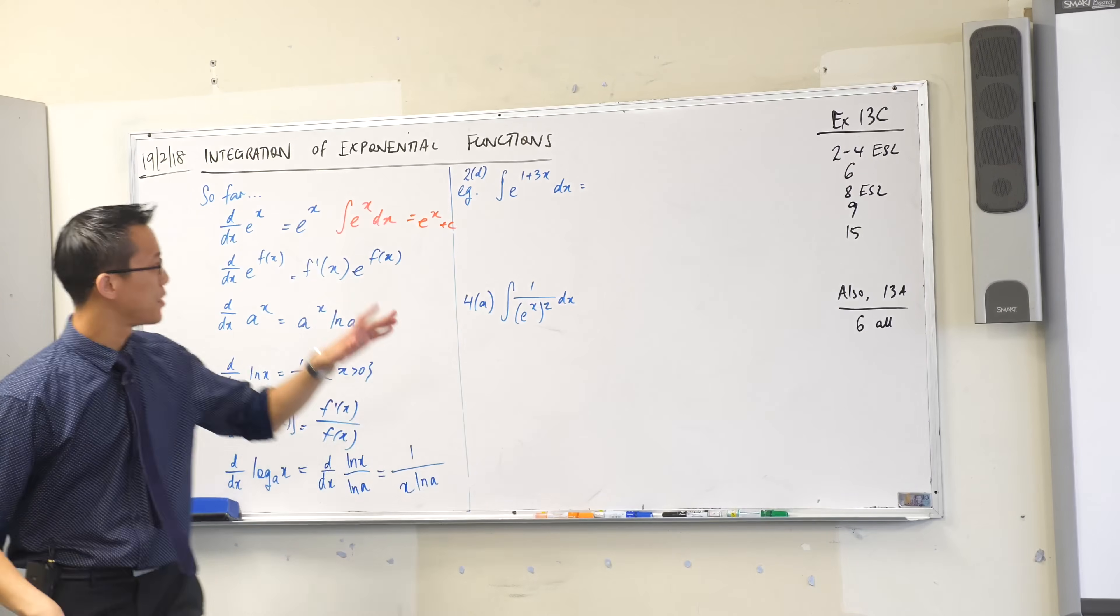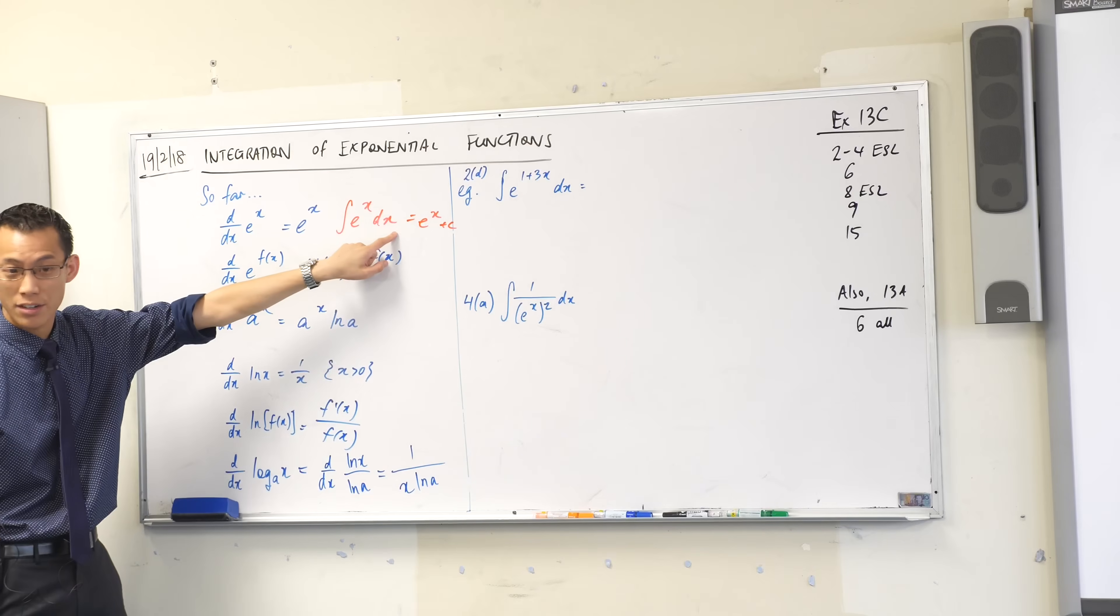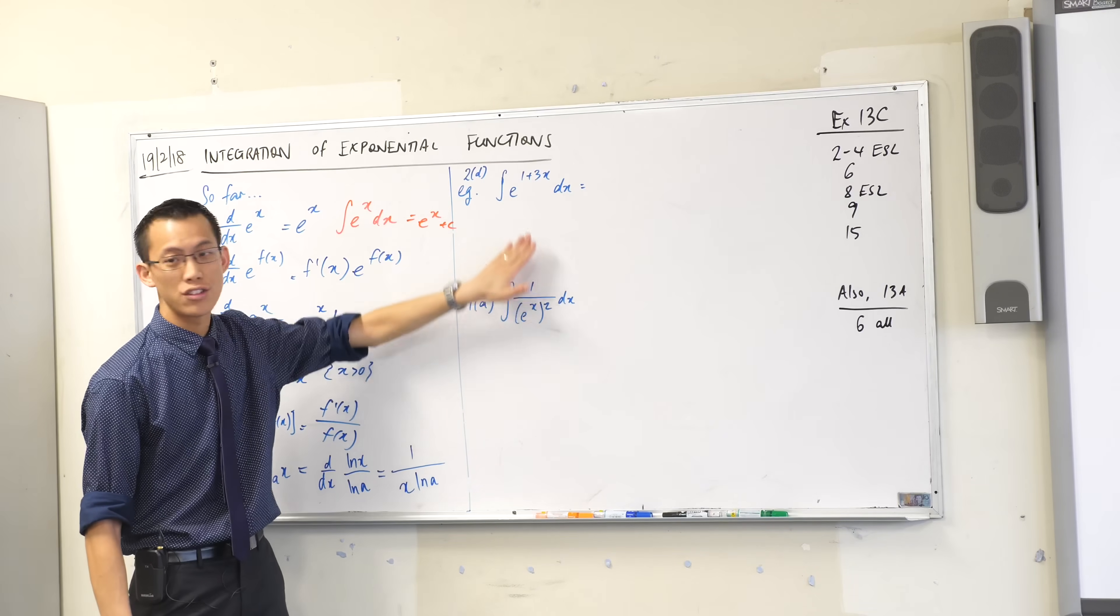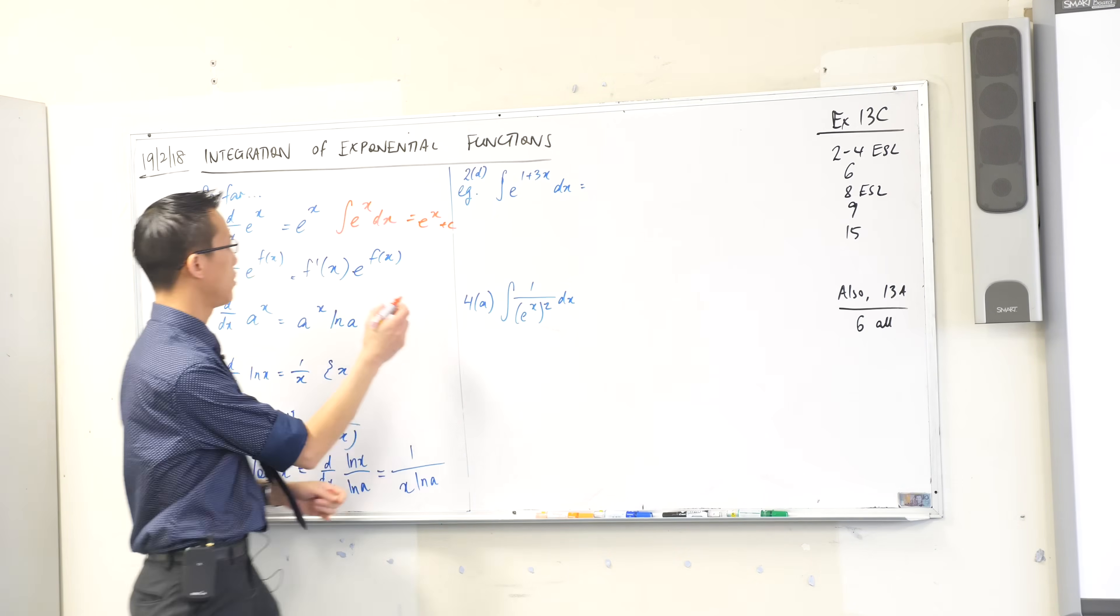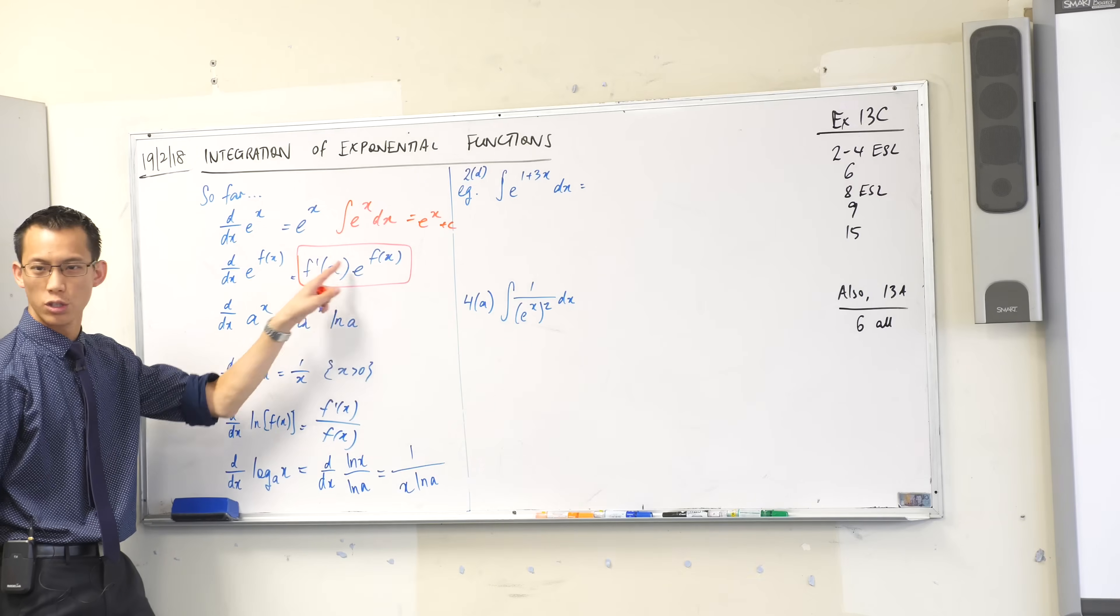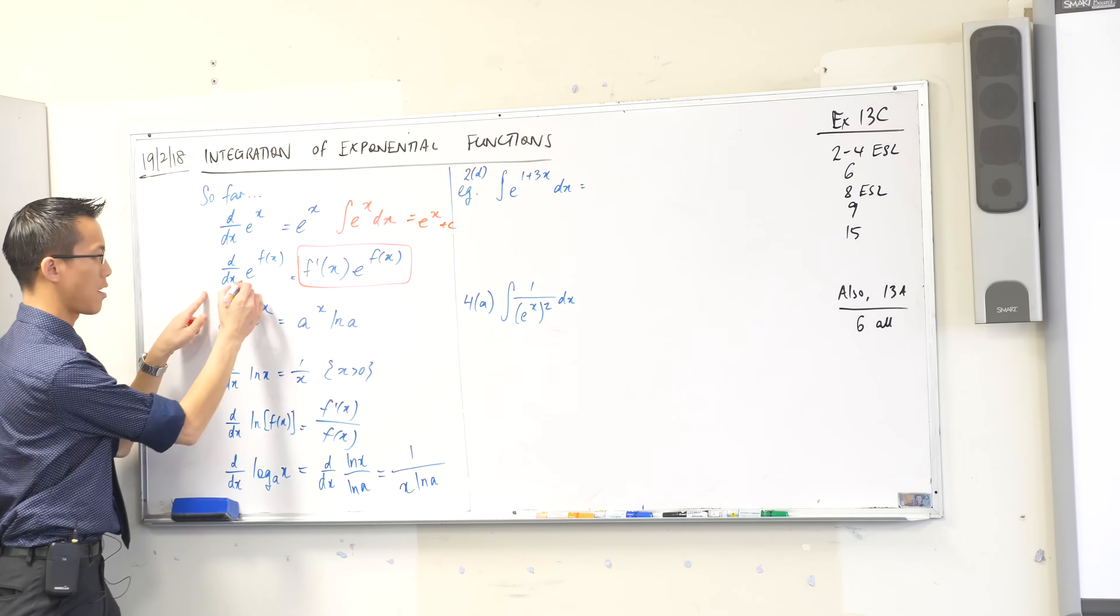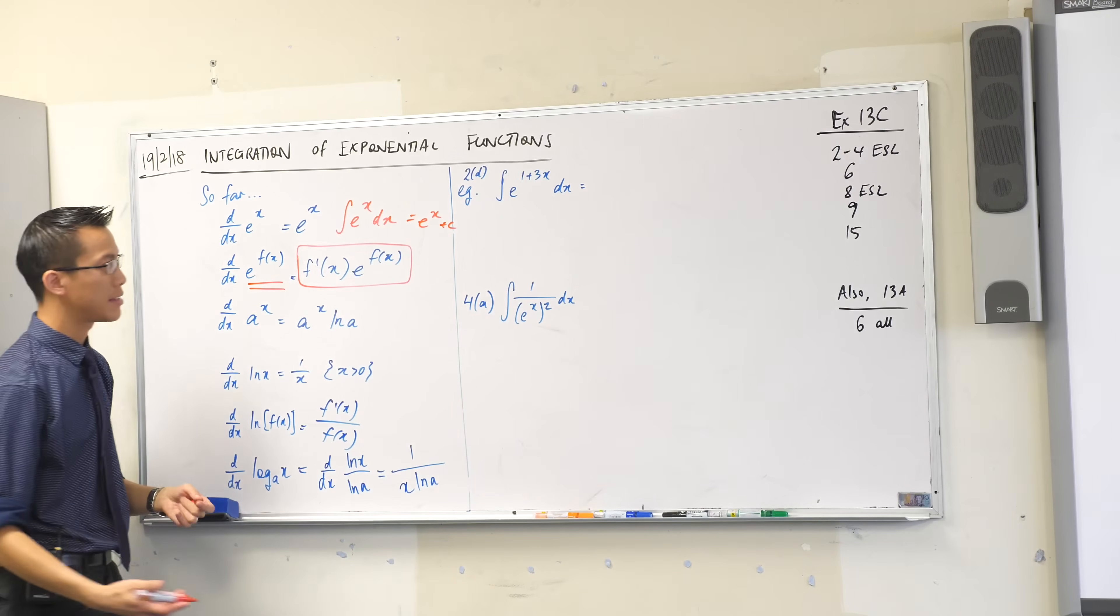So, just like before, how we said this statement about differentiation makes this statement about integration. Let's now have a look at using reverse chain rule on these exponentials. So what I'm searching for is something that looks like this. If I find something that looks like this, I can integrate it to come back here. Does that make sense?